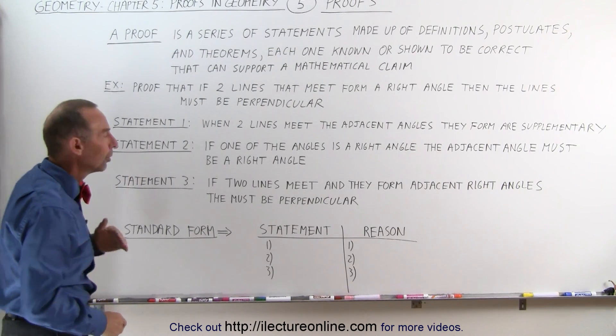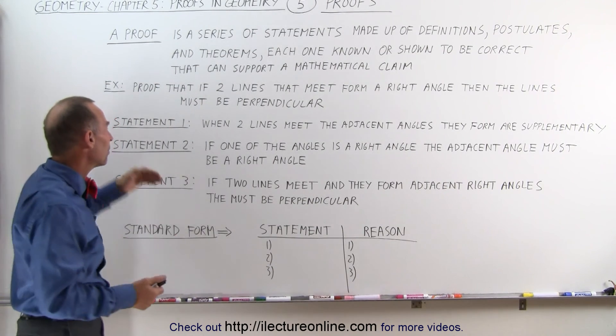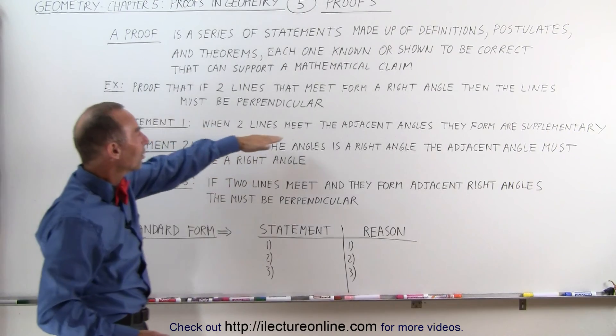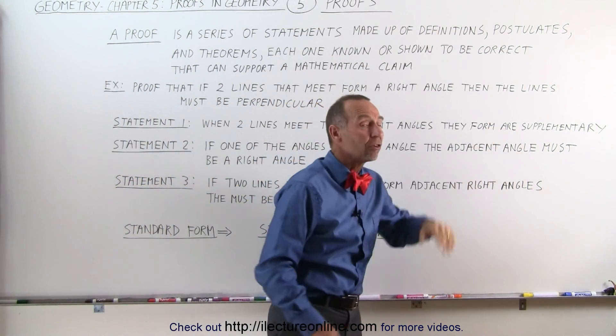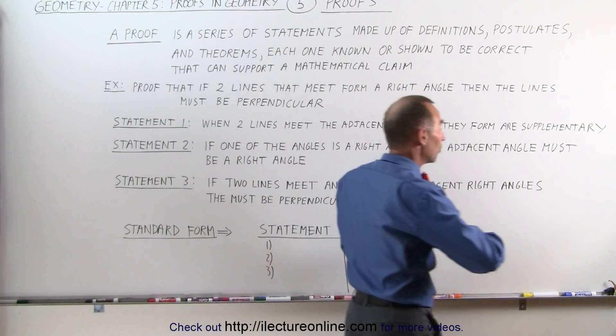So let's look at an example. Here are three statements. Statement one: when two lines meet, the adjacent angles they form are supplementary. And we know that to be true.